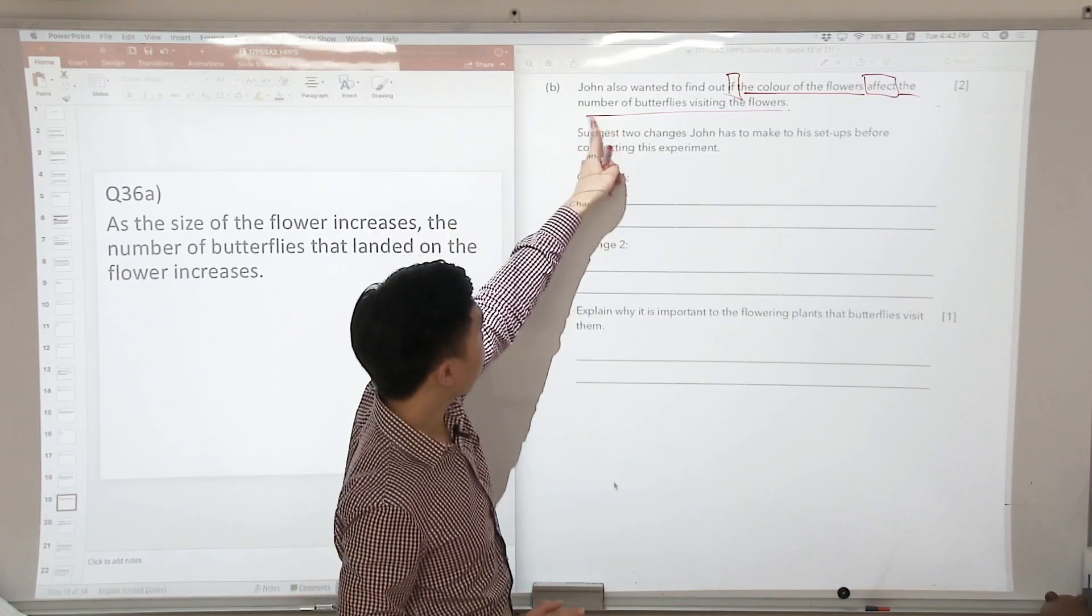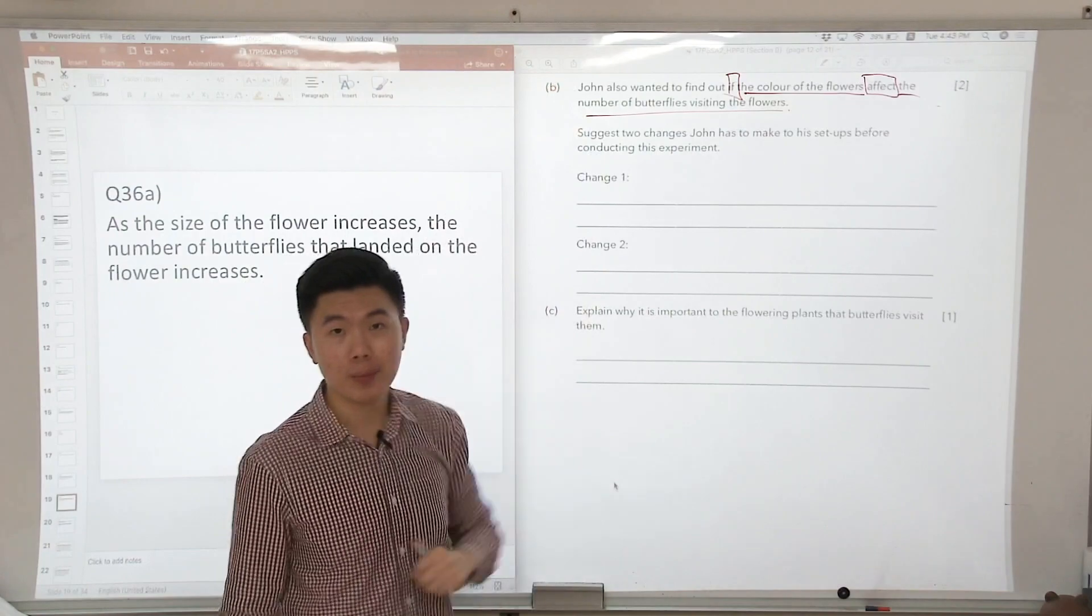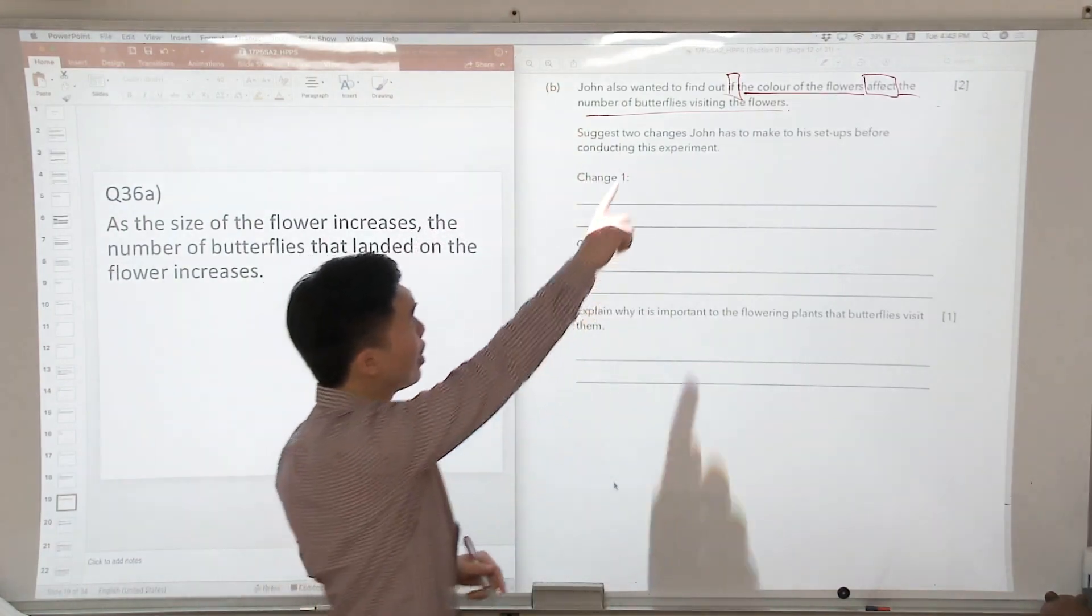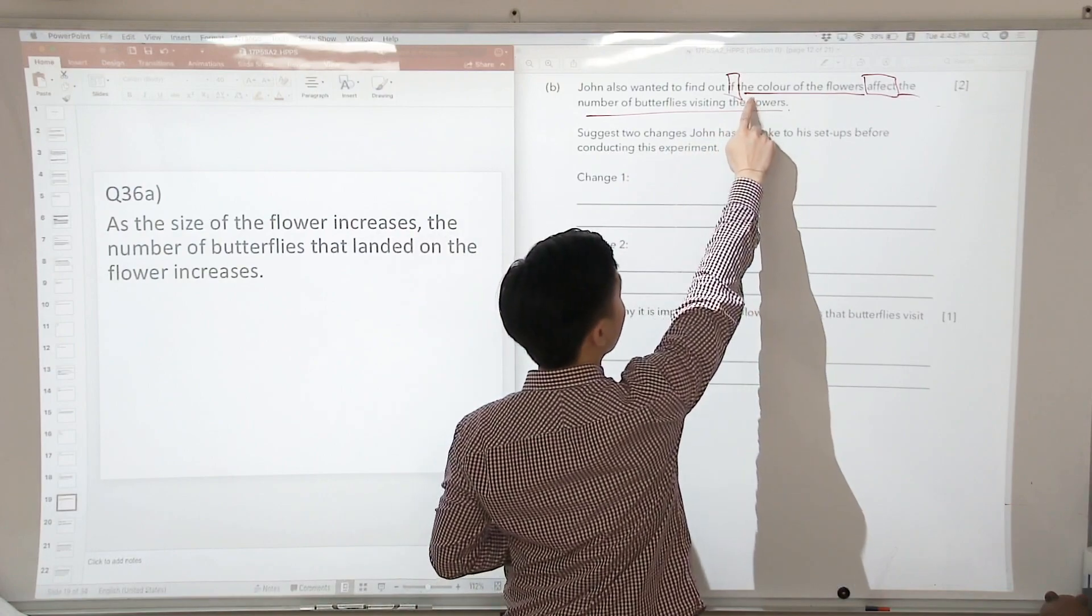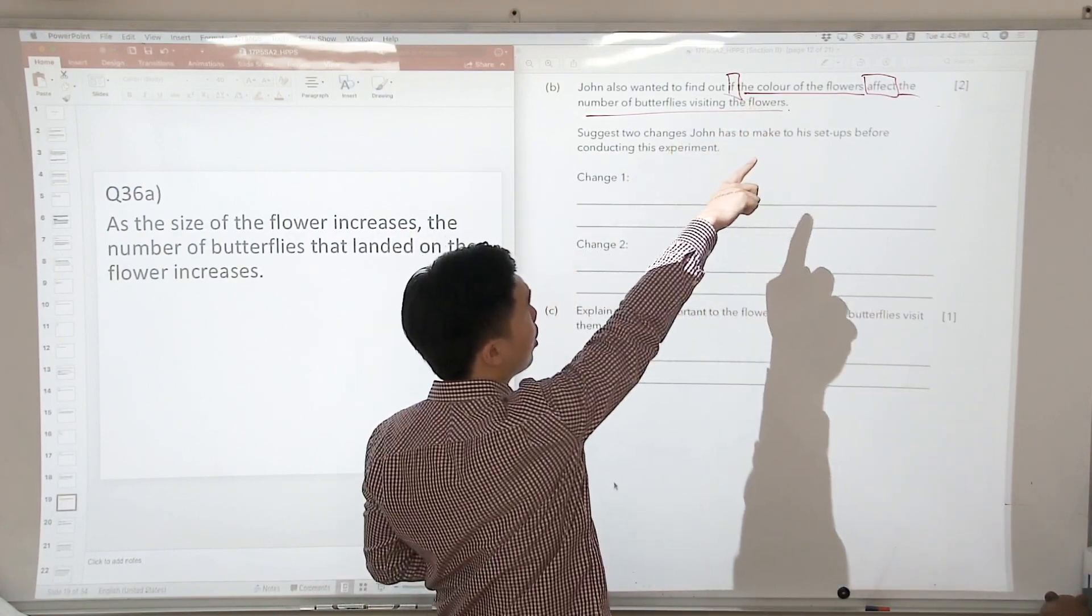The variable behind the number of butterflies visiting the flowers is the same as the one on top, in the earlier information that they have given you. But now, they want to change the variable that we are testing, which is the color of the flowers.